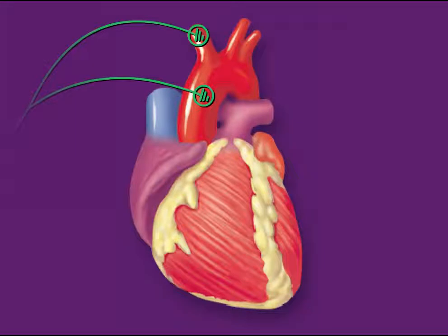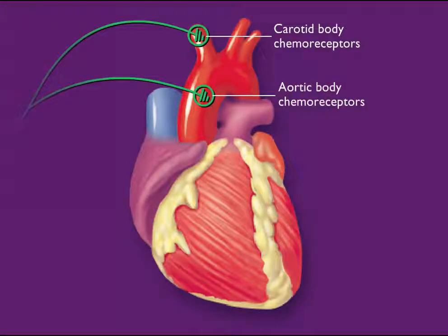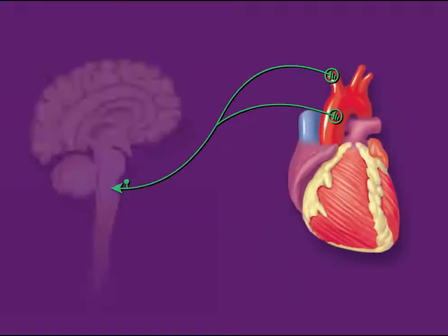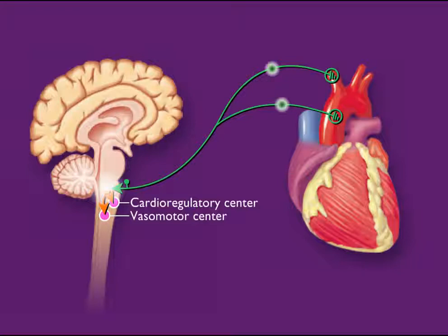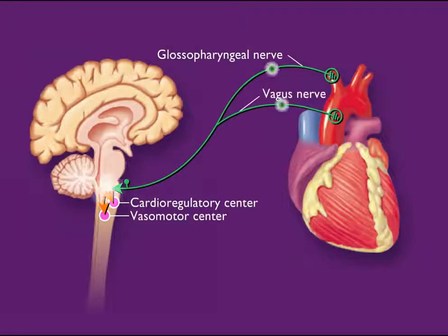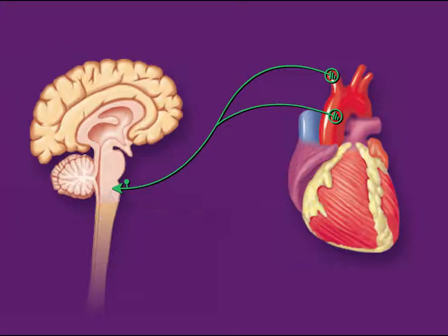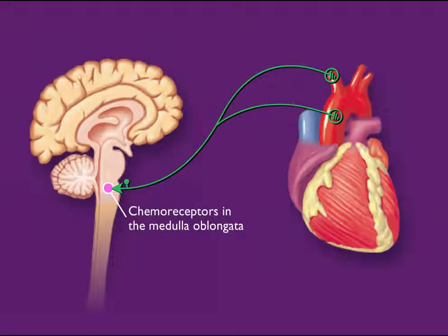Chemoreceptors in the carotid and aortic bodies monitor blood oxygen, carbon dioxide, and pH. Impulses from these chemoreceptors are conducted to the control centers for heart and blood vessels via the glossopharyngeal and vagus nerves. Chemoreceptors in the medulla oblongata monitor blood carbon dioxide and pH.